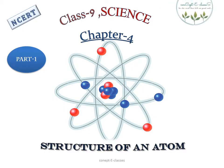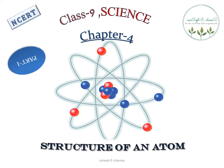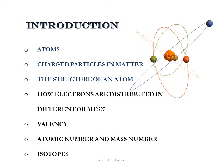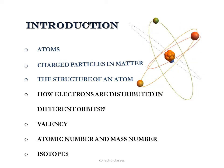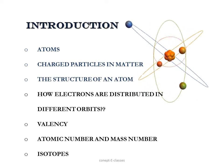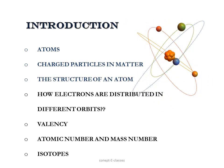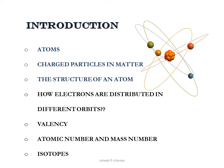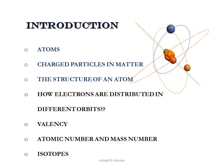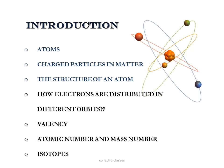This is Concept E Classes and today we will deal with Part 1 of Chapter 4 in Class 9 Science: Structure of an Atom. In Part 1, first we will see about atoms, then the charged particles in an atom such as protons and electrons, then the structure of an atom where various scientists proposed various atomic models. The rest of the topics will be discussed in Part 2.